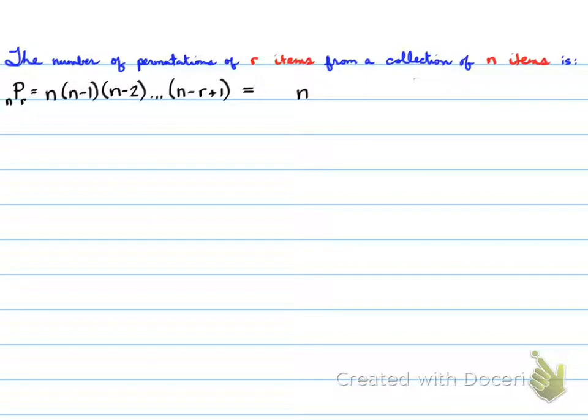The number of permutations of R items from a collection of N items is NPR, which means I take N factorial over N minus R factorial. That's how you calculate it. So it's N times N minus 1 times N minus 2 times N minus R plus 1. That's the last one we'll stop at. Easier way to calculate it is using this expression to calculate the values we need.